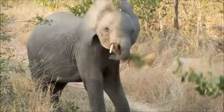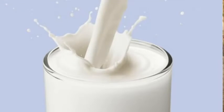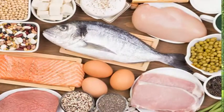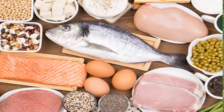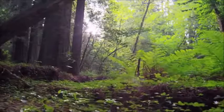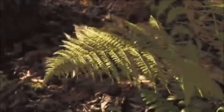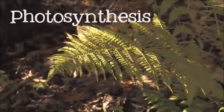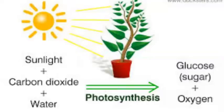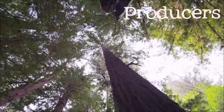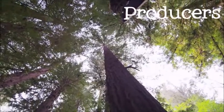We use animal products like honey and milk also as food. Animal flesh, fish, and eggs are also utilized by non-vegetarians. Plants, in the presence of sunlight and by absorbing water through roots, prepare their own food — this is called photosynthesis. So, plants are called primary producers.